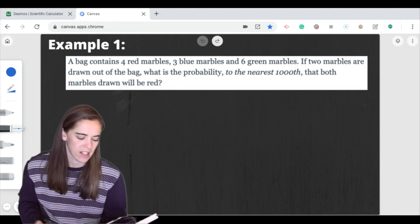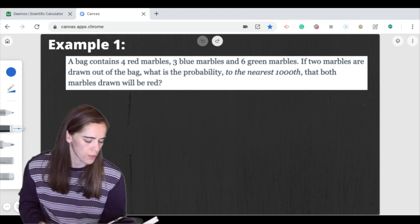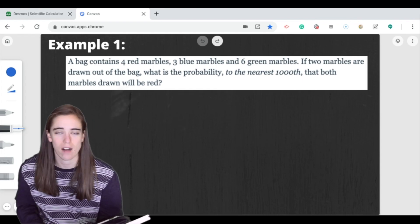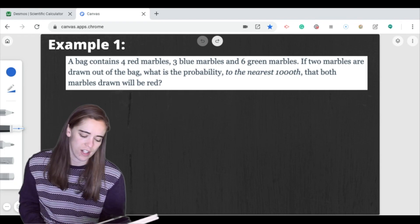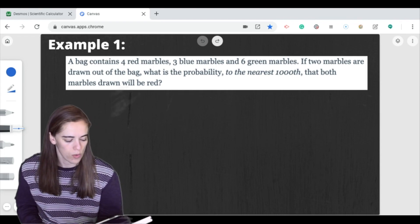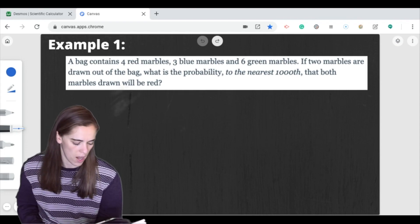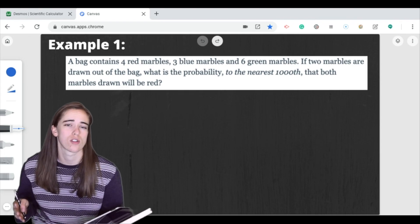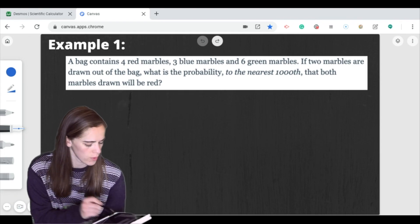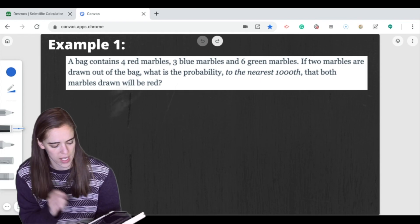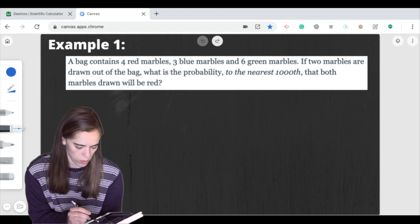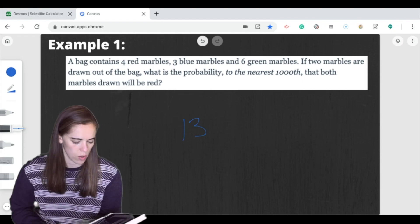All right, so our first problem says a bag contains four red marbles, three blue marbles, and six green marbles. If two marbles are drawn out of the bag, what is the probability to the nearest thousandth that both marbles drawn are red? So whenever we're finding probability, we always need to know what our total number of outcomes are. So for this one I have four red marbles, three blue marbles, and six green marbles. That means I have a total of 13 marbles.